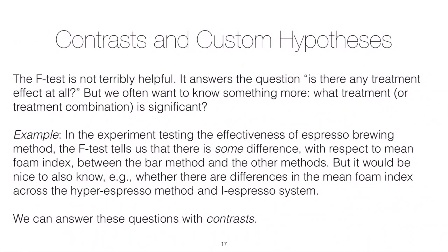But one of the downsides of one-way ANOVA is that the F-test associated with it is not super helpful. It can help us answer the question is there any treatment effect at all, is it statistically significant, but often we want to know something more at a granular level like what treatment combination is significant.